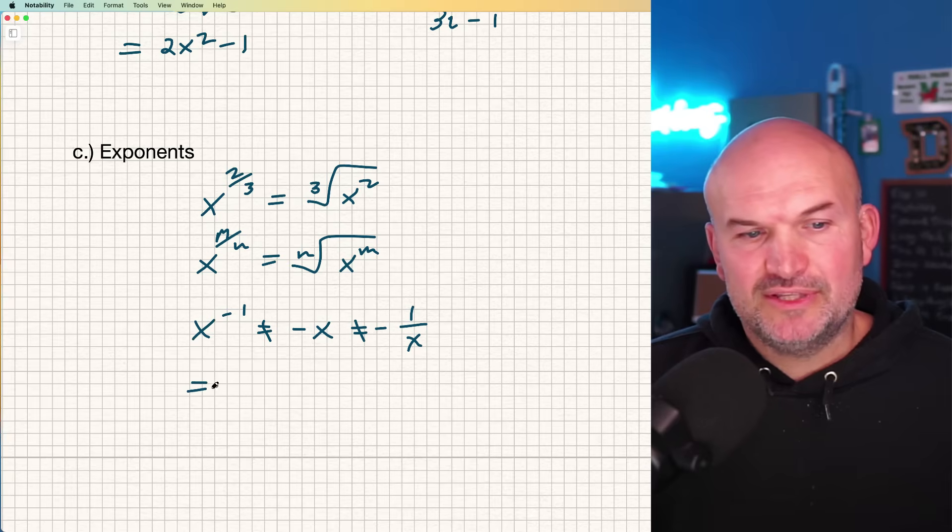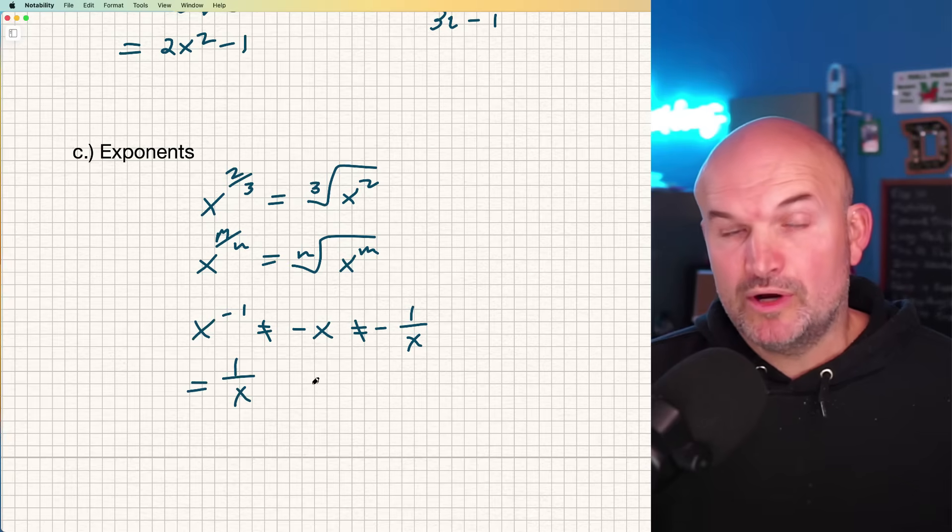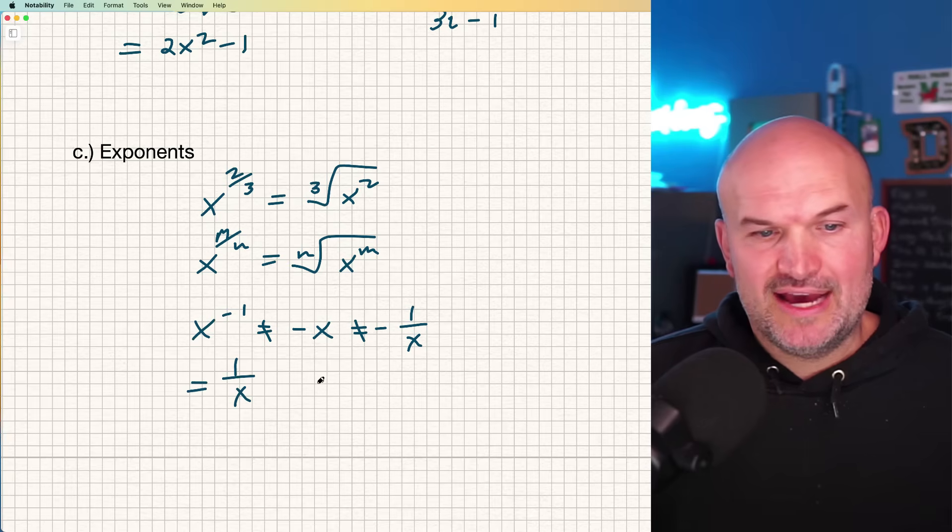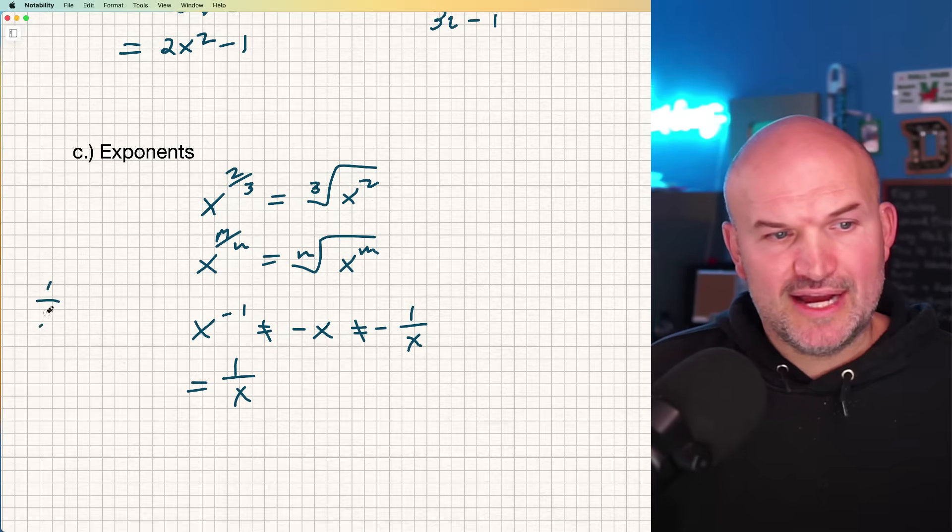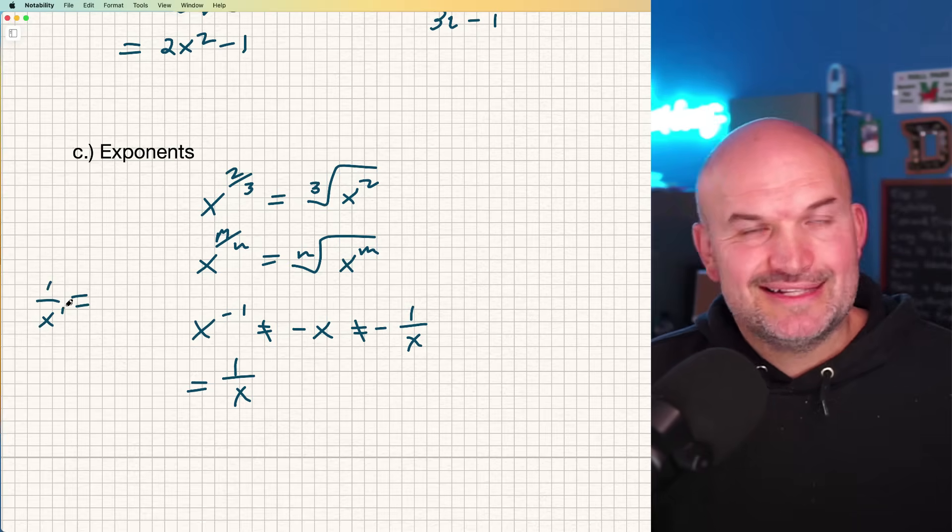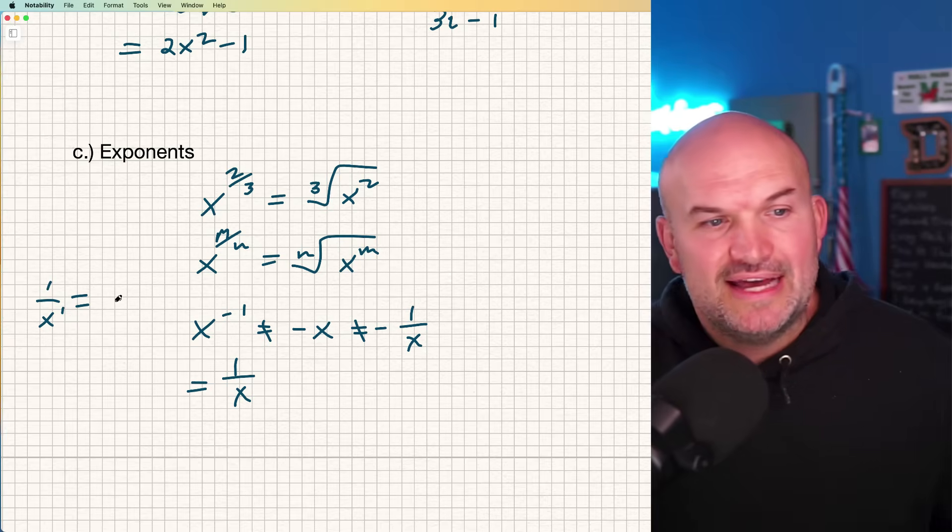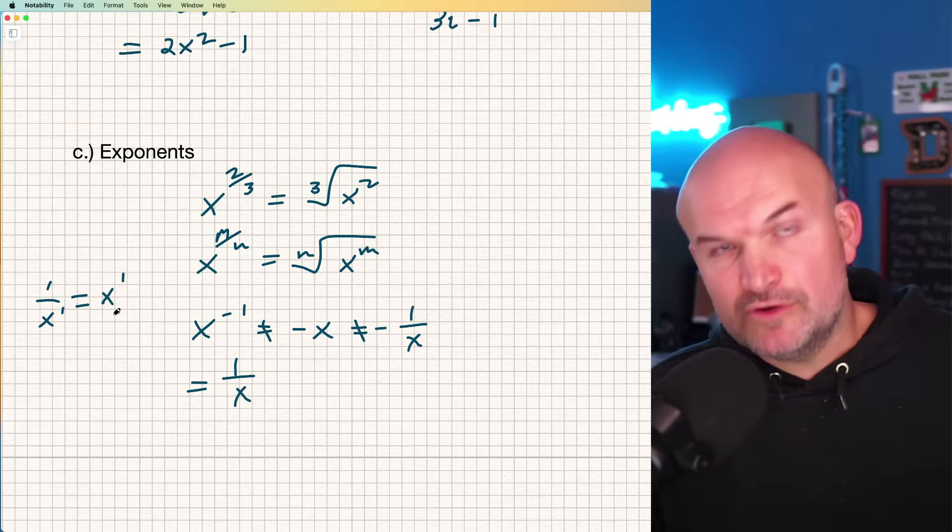x to the negative first is simply equal to the reciprocal, which is one over x. And the same thing, if I have one over x to the negative first power, that's not going to equal negative x. That is simply just x to the first power.